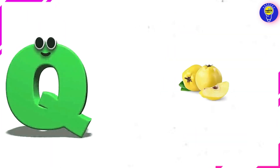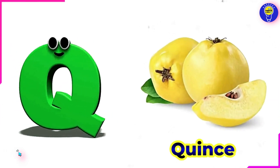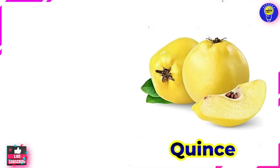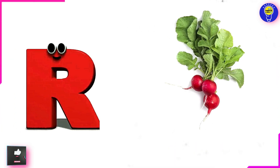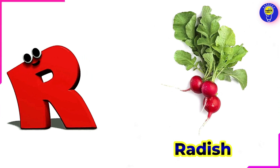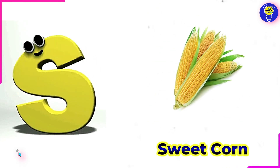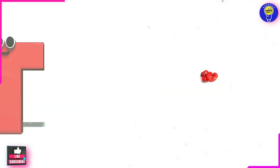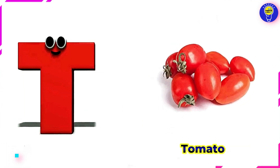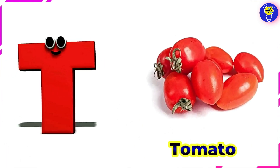Q is for quince. R is for radish. S is for sweet corn. T is for tomato.